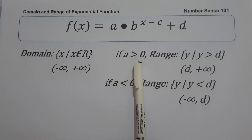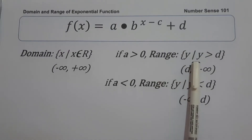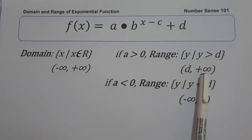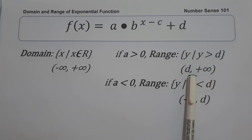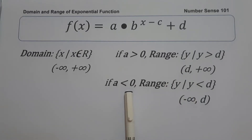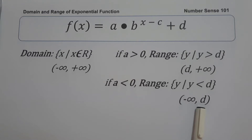If the value of a is greater than 0, the range is the set of y values such that y is greater than d, or in interval notation, from d up to positive infinity, where d is not included. And if the value of a is less than 0, the range is the set of y values such that y is less than d, or from negative infinity up to d, where d is not included. These are the basic concepts to find the domain and range of exponential functions.